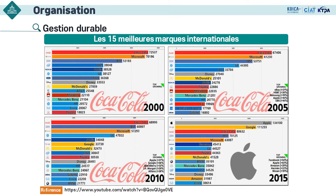Voici les meilleures marques internationales. En 2000, les top 15 sont Coca-Cola, Microsoft, Intel, Disney, McDonald's, etc. En 2005, Coca-Cola reste au premier rang, Microsoft et IBM sont toujours dans le top 15. En bas à droite, une liste top growing montre une croissance remarquable — eBay, Apple et Samsung apparaissent comme un coup de tonnerre.